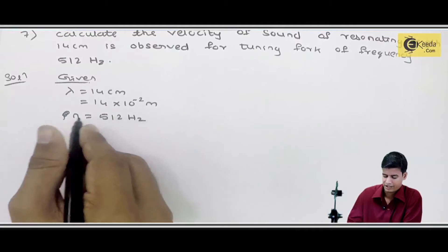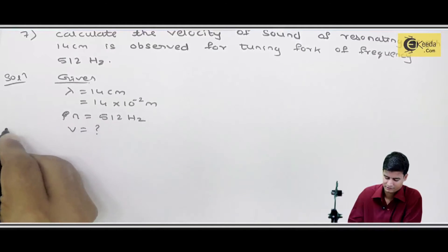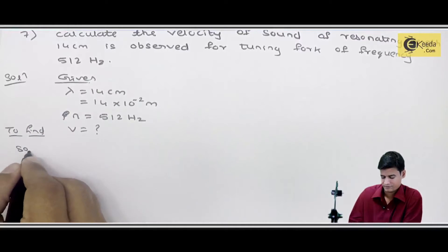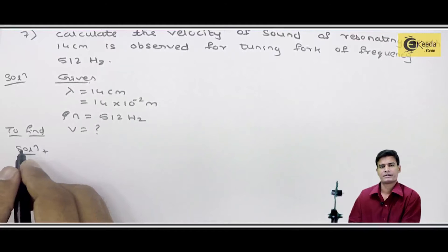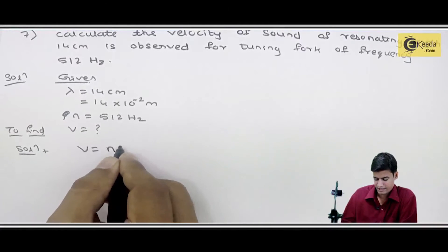To find velocity. Solution: same formula which we use, v equals n into lambda.